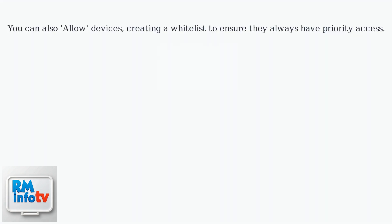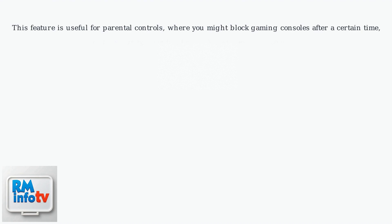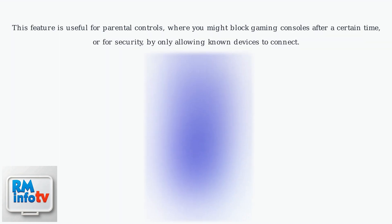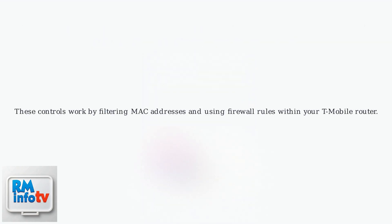You can also allow devices, creating a whitelist to ensure they always have priority access. This feature is useful for parental controls, where you might block gaming consoles after a certain time, or for security by only allowing known devices to connect. These controls work by filtering MAC addresses and using firewall rules within your T-Mobile router.